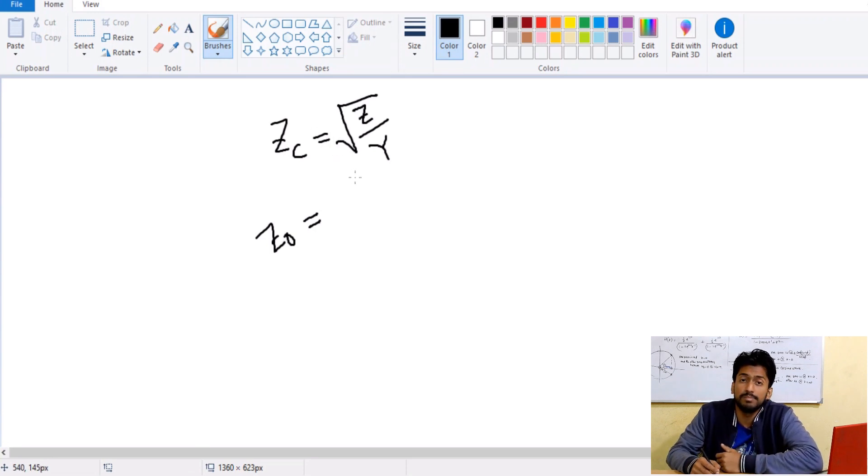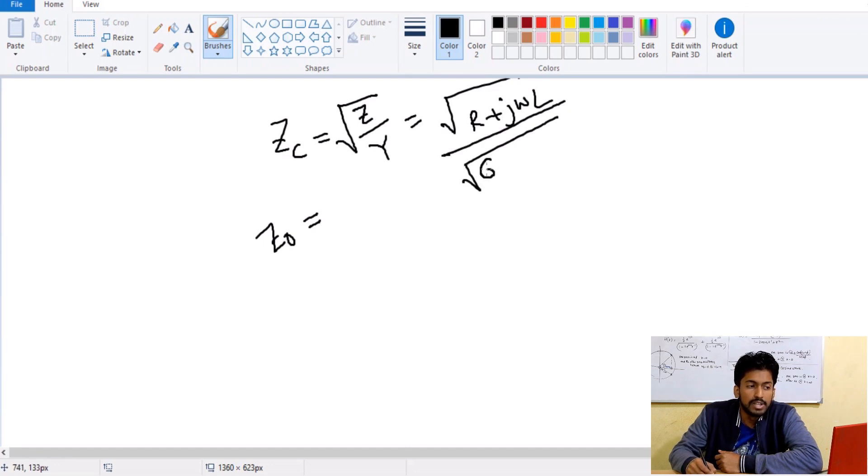For this Z naught, means the surge impedance part, as you can see Z is defined by R plus j omega L, and Y is defined by G plus j omega C. Now if this R and G are getting omitted, this total part will be deleted.